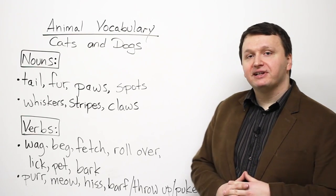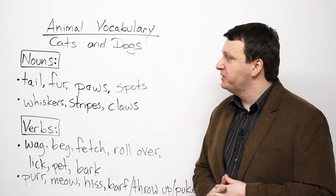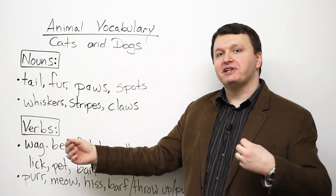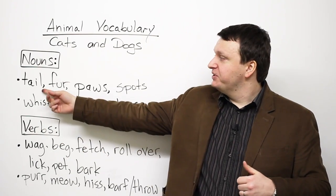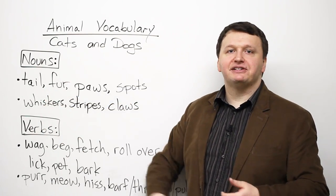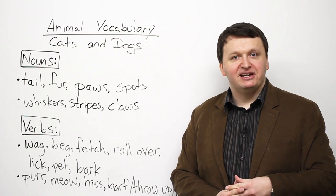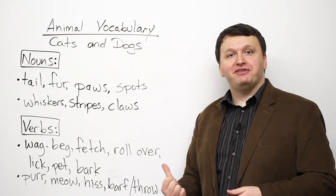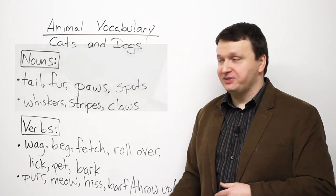So first, let's look at the nouns. Here we have tail, and we're going to focus on the pronunciation as well. So this is tail. Cats and dogs have tails. Basically, it's the back of the animal that can move around, as you can see right here.